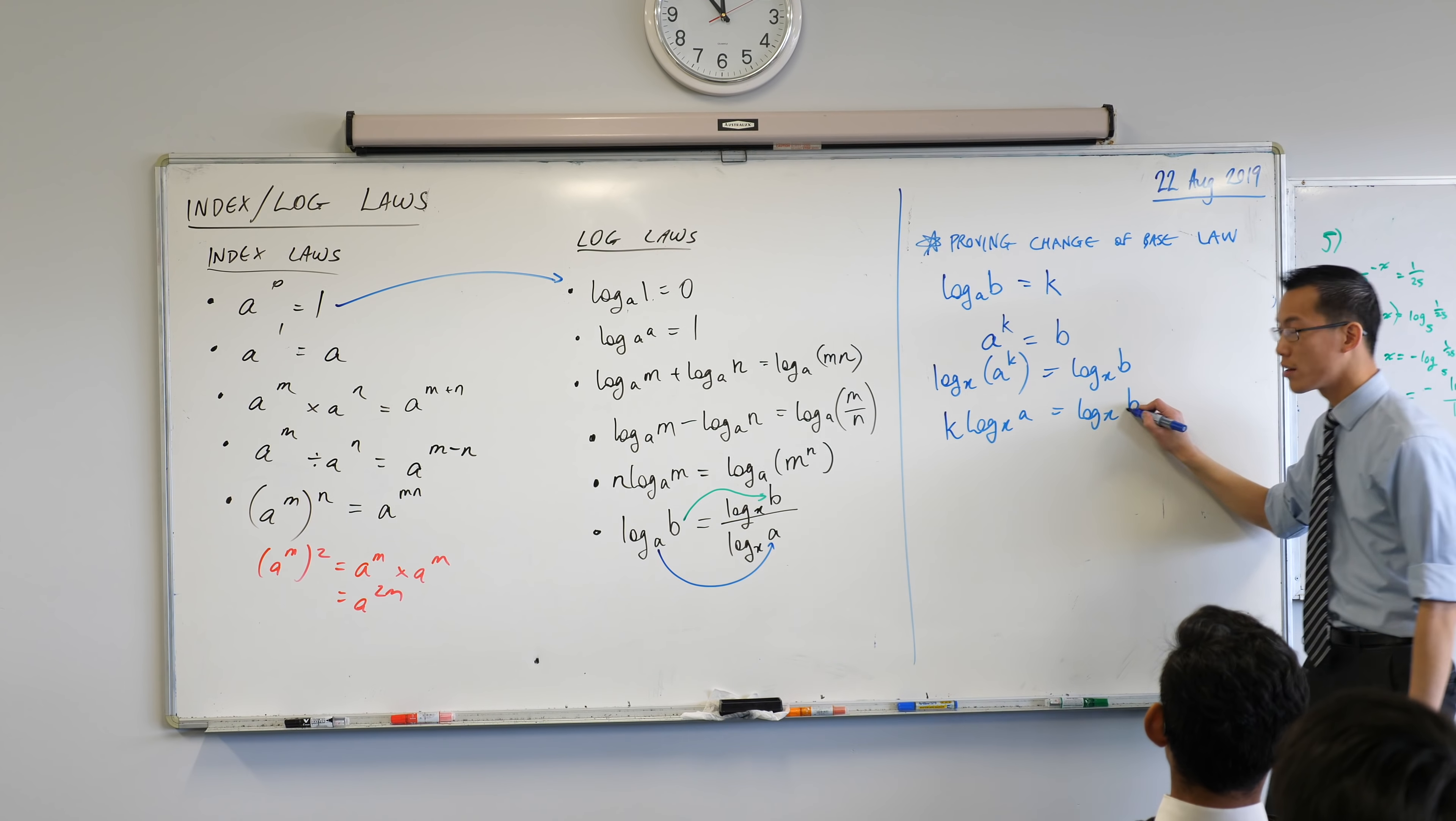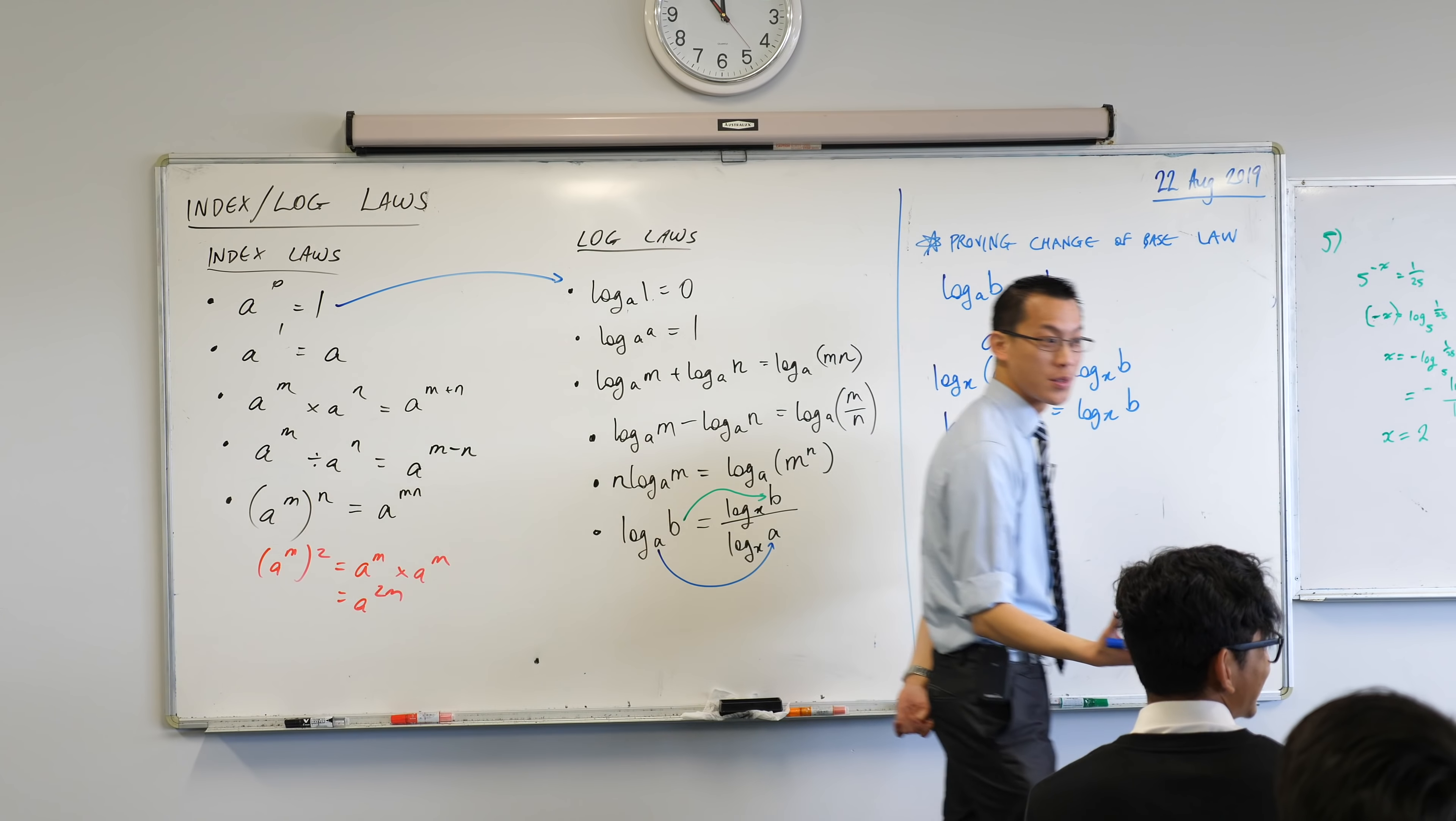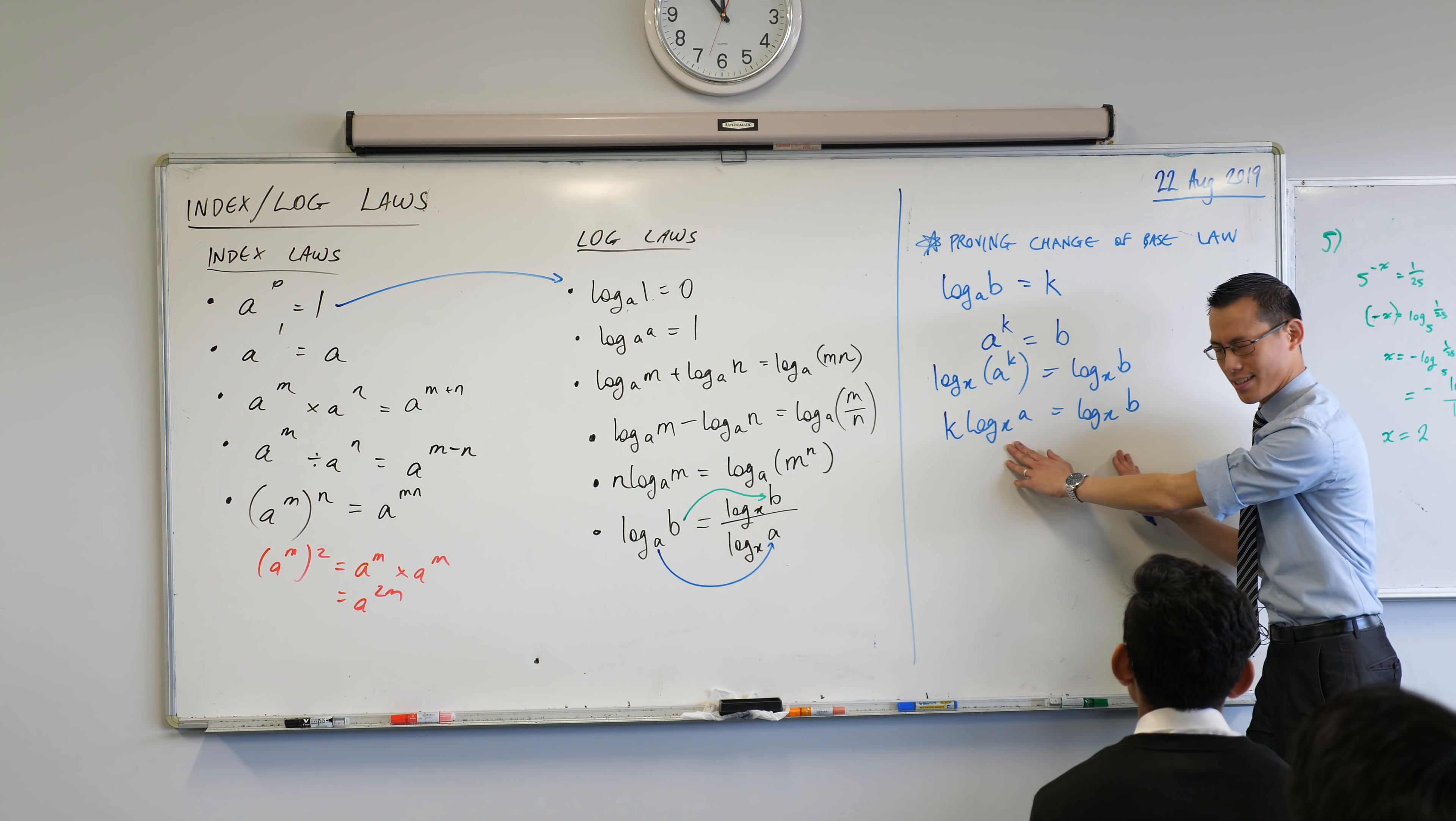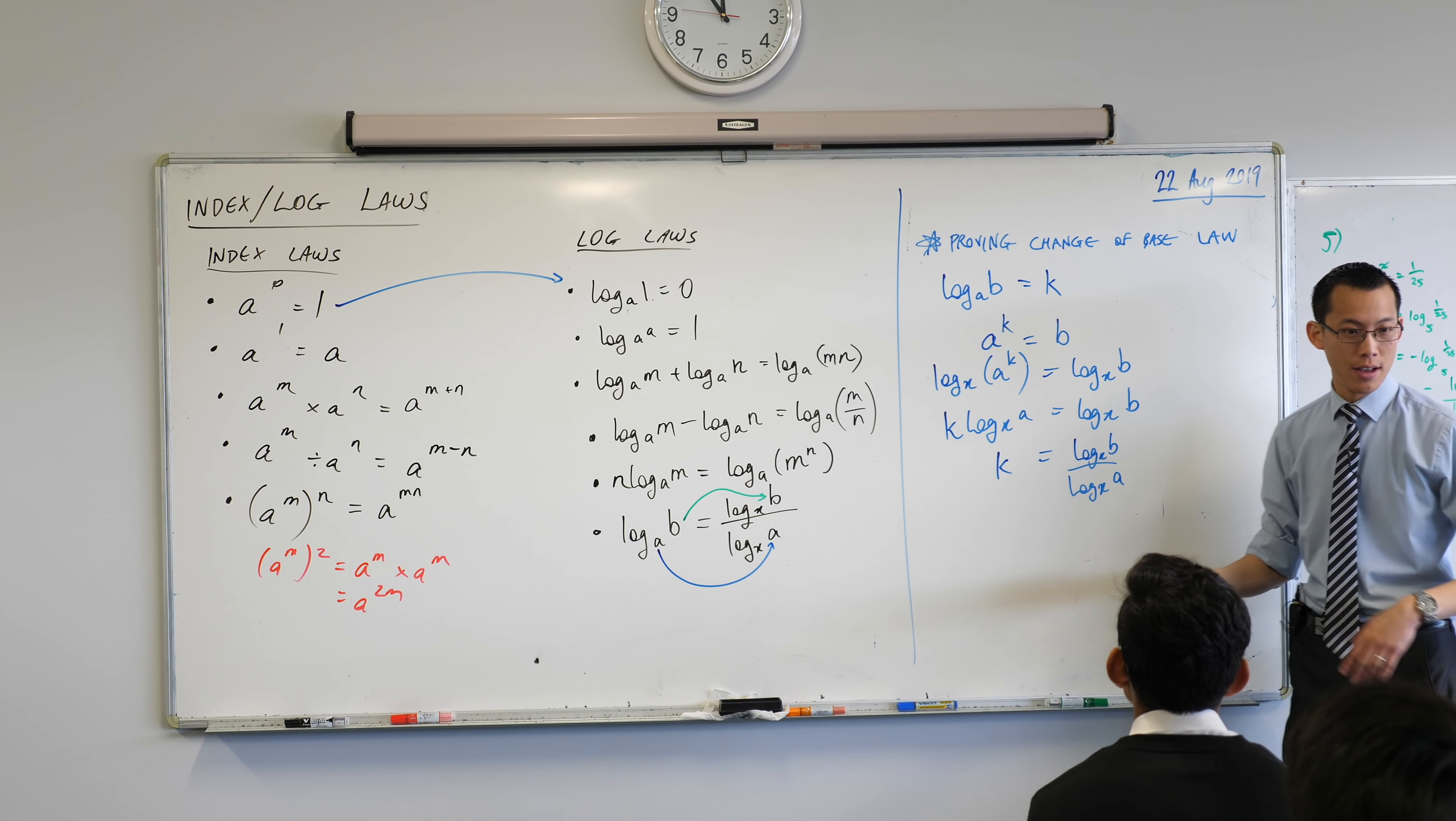Now we're almost there. Do you reckon you guys can tell me what to do next? Think about where I'm trying to end up. This is my goal. This is what I'm trying to prove. What can I do to both sides that might be helpful here? Divide. I can divide. What can I divide both sides by? I'll divide both sides by this guy. See how that's supposed to be on my denominator? So I'm going to divide both sides by log base x of a. That leaves what on the left hand side? K. Very good, just by itself. Over here, I've got that fraction. That exact fraction. Log base x of b over log base x of a.